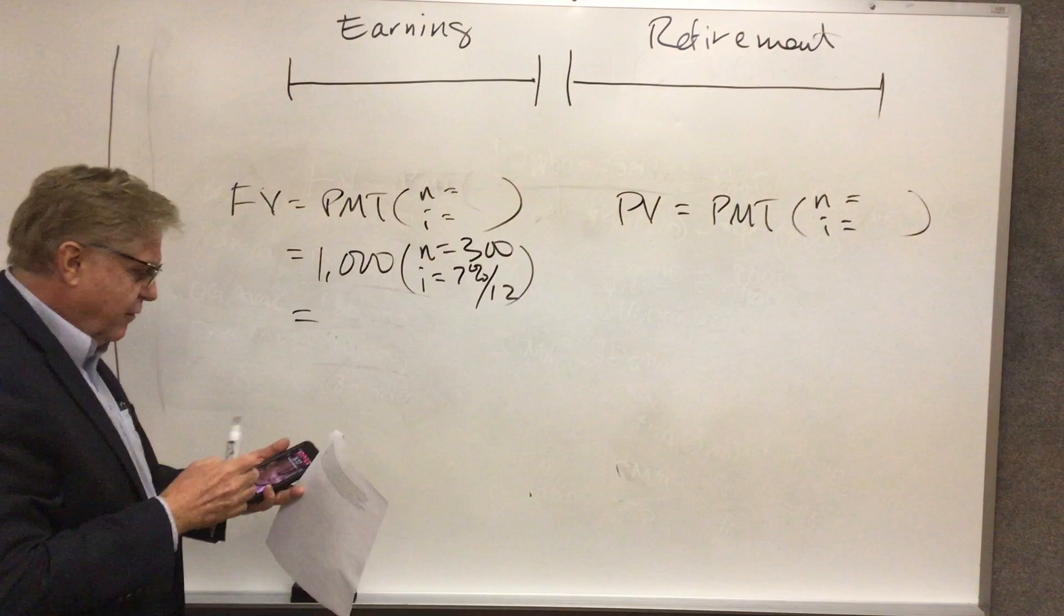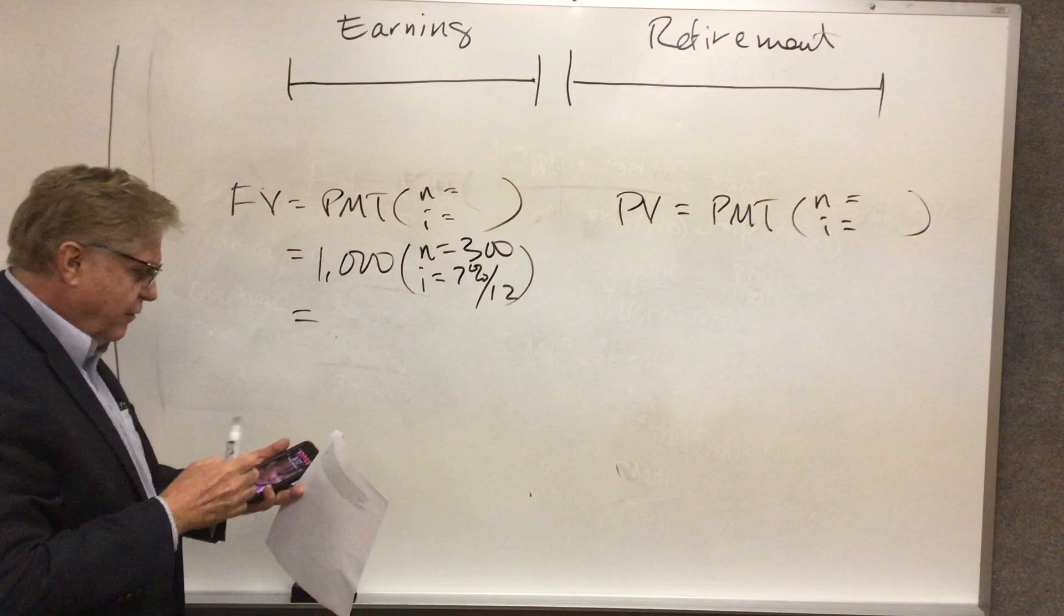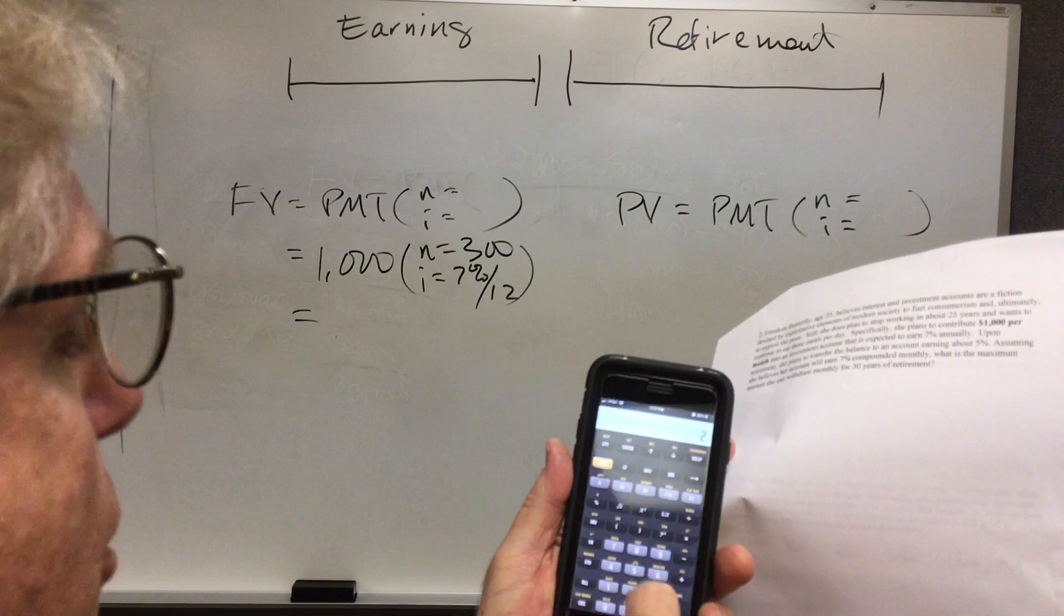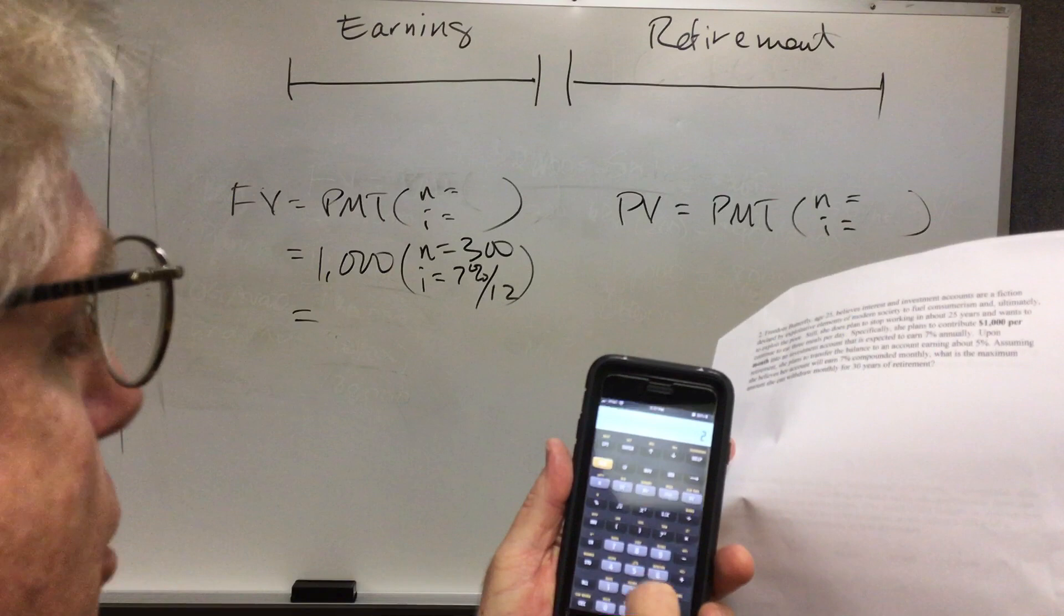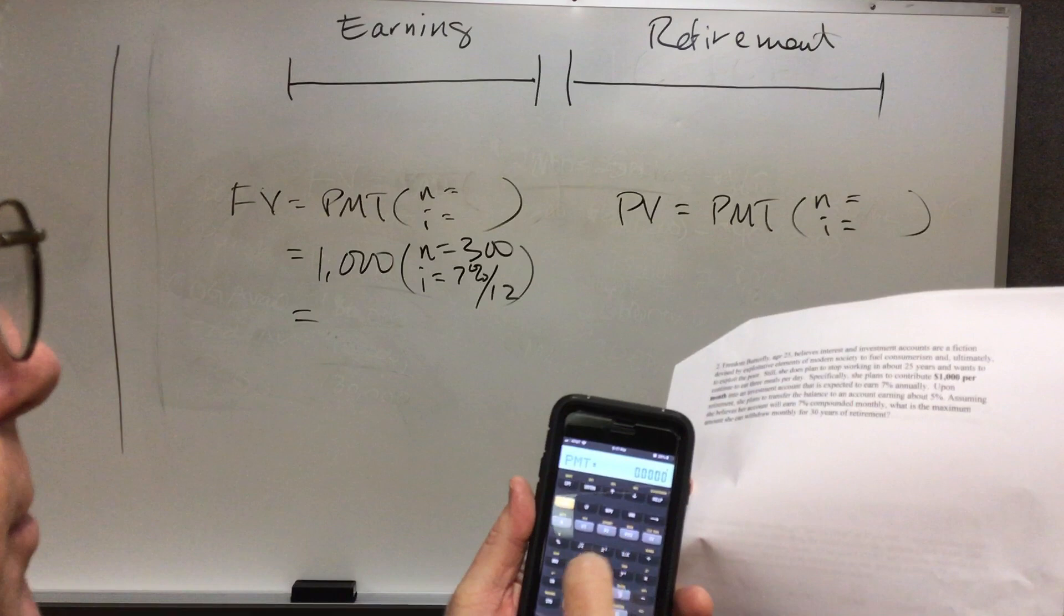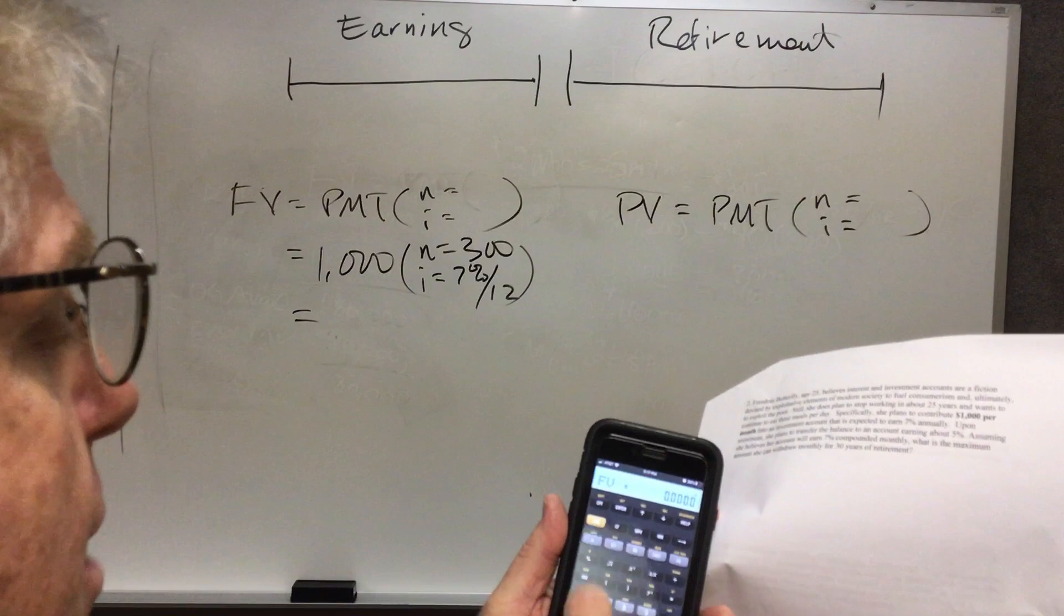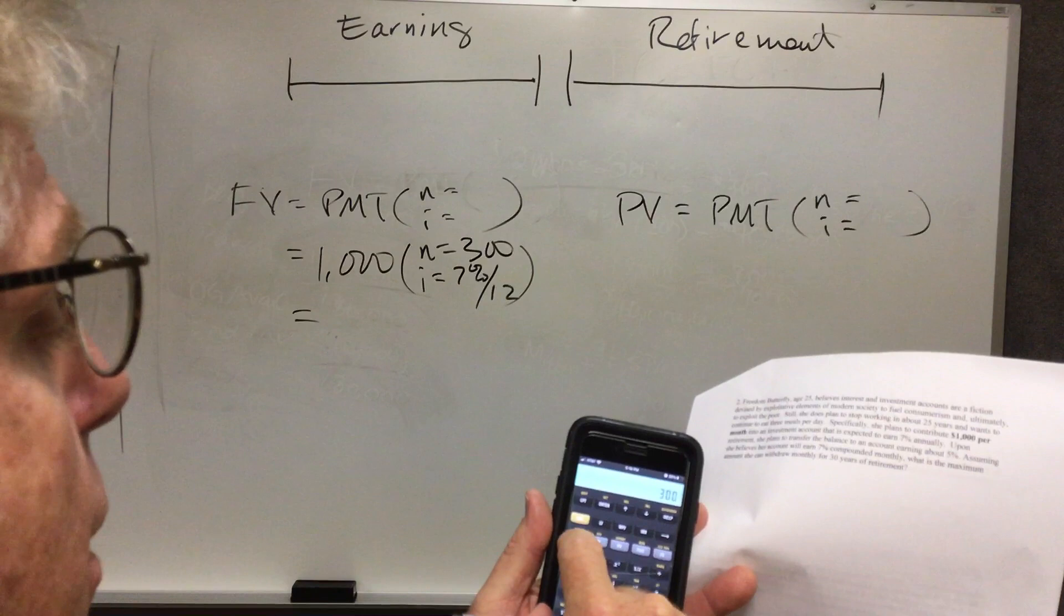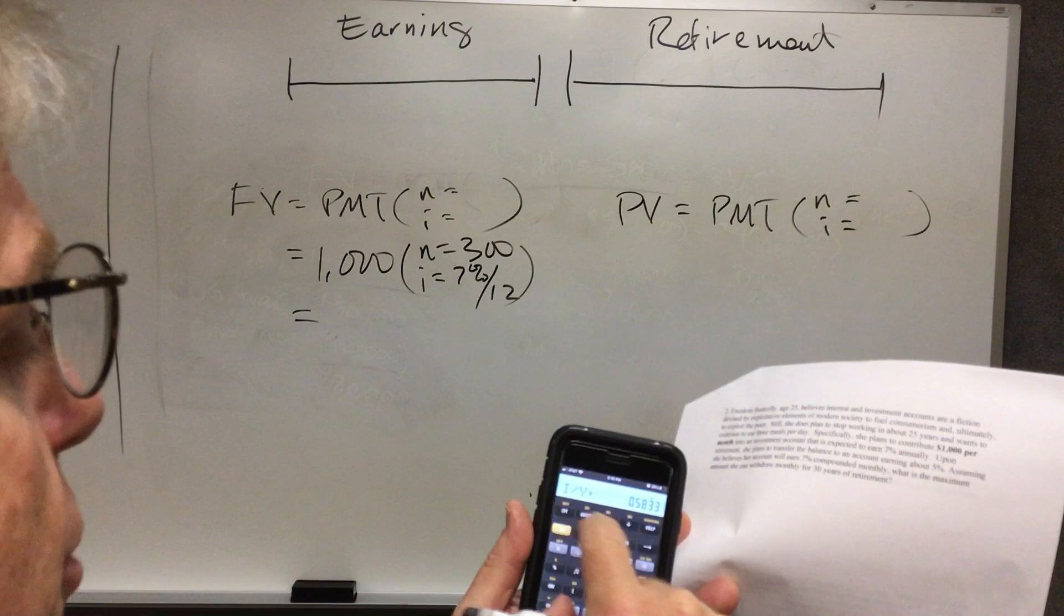So we can figure out the future value. I'm going to clear out the calculator. $1,000 is the payment. 300 is N, and 7 divided by 12 equals... I'm going to compute future value. I messed up, it's easy to get turned around if you're not careful. It's late in the day. $1,000 payment, 300 was N, 7 divided by 12 is I, compute future value: $810,072. Okay.